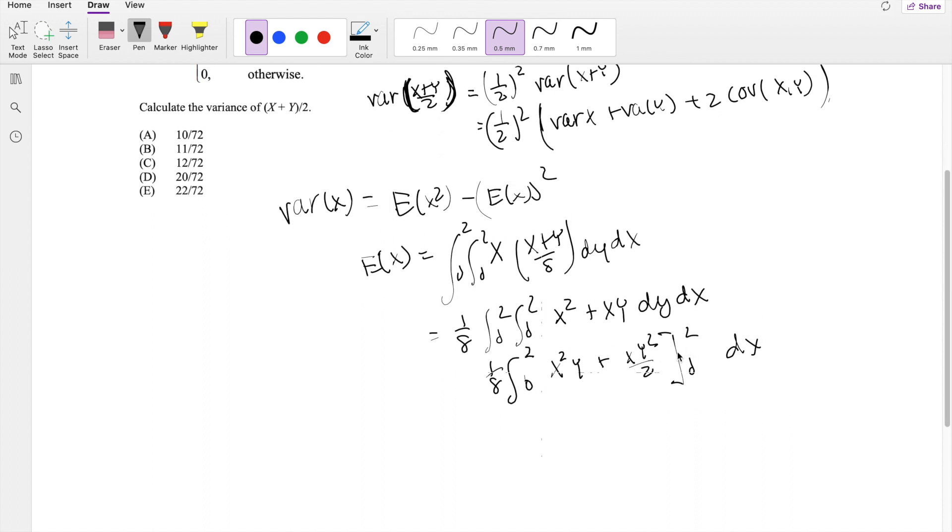x squared is a constant, so you get y plus xy squared over 2, evaluating from 0 to 2 here, and there's still the outside integral. Plugging in 2 for y, you get x squared times 2 plus 2x, evaluating in terms of dx now. You get x cubed, 2/3, plus x squared, evaluating from 0 to 2.